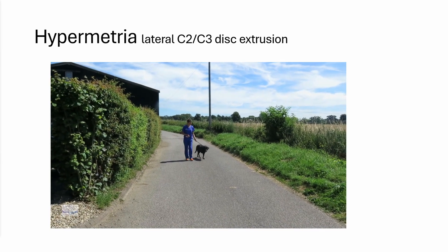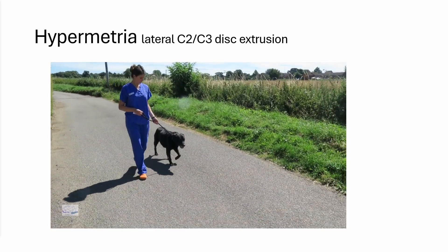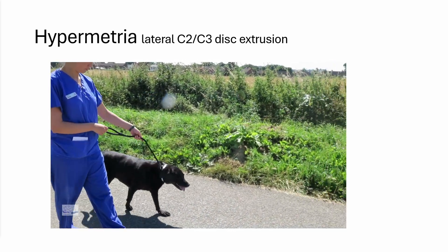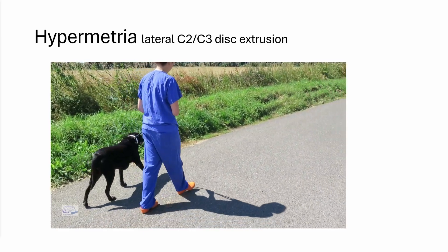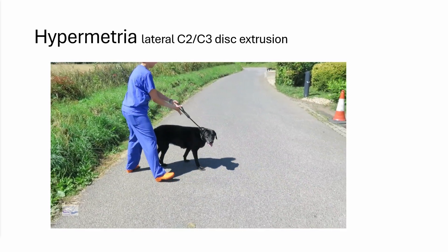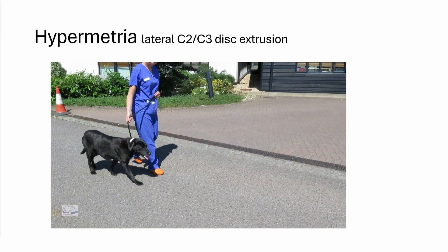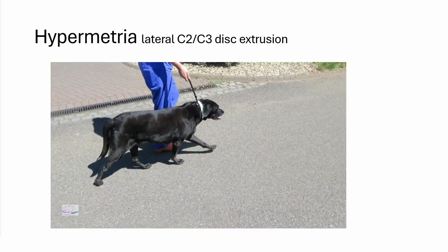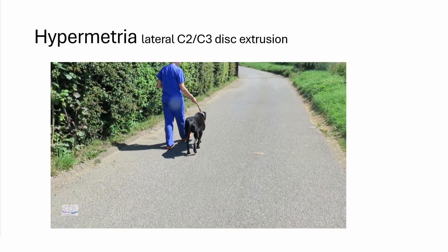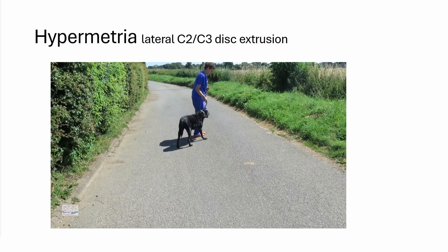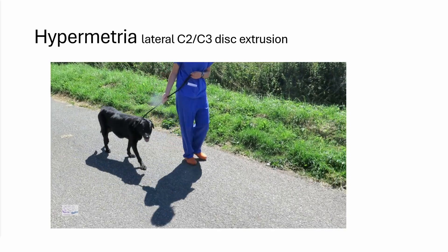Now here we have hypermetria due to a spinal cord problem — a lateral C2-C3 disc extrusion on the right. This hypermetric action looks somewhat similar to the cerebellar presentation. It is unusual with spinal disease to see flexion through all joints, but it can occur. You can also see the pelvic limb action is hypermetric, though more classically the right pelvic limb comes far underneath the body and is quite stiff.